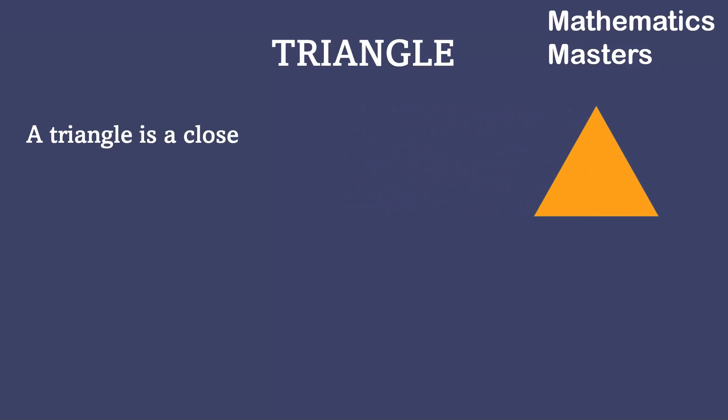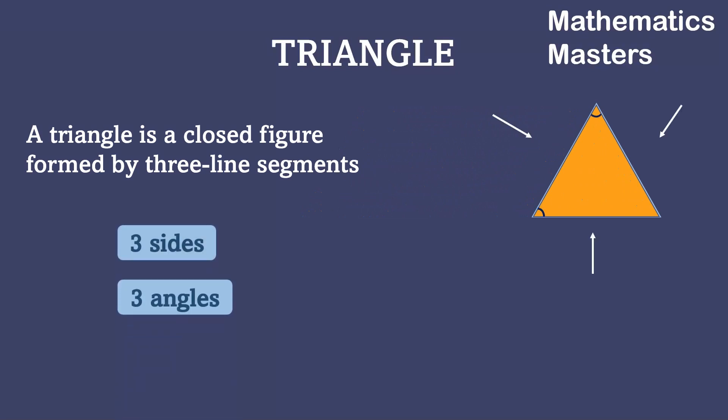A triangle is a closed figure made up of three line segments. It has three sides, three angles and three vertices.